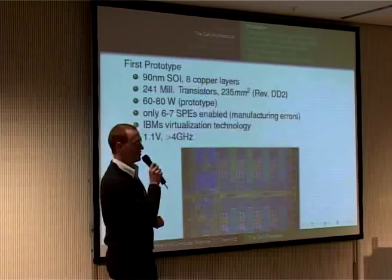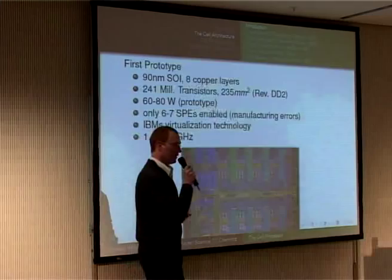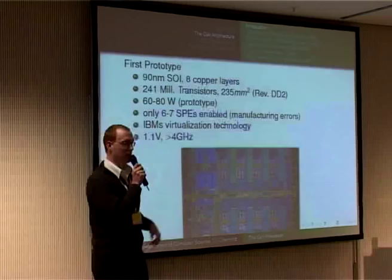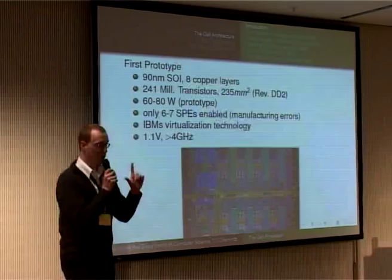The Cell processor supports IBM virtualization technology — we can run multiple operating systems simultaneously, like Xen or VMware in hardware. It's operated at 1.1 volt and is able to achieve clock frequencies higher than 4 GHz in the prototypic implementation. Now coming to the interesting thing: the floor plan of the Cell processor. We have the PPE and the L2 cache — which is quite big. Every square millimeter on this floor plan costs money, so it's about square millimeters, not just transistors.